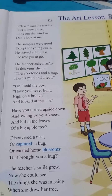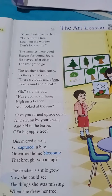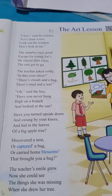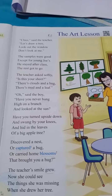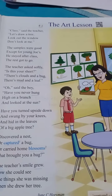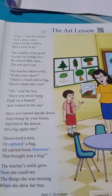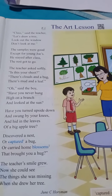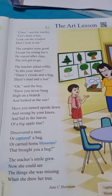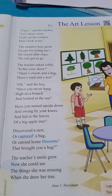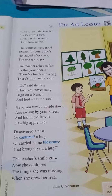Joe started asking questions to the teacher: 'Oh, said the boy, have you ever hung high on a branch and looked at the sun? Have you turned upside down and swung by your knees and hid in the leaves of a big apple tree?' Joe asked the teacher: have you ever hung high on a branch of a tree, moved side to side, and looked at the sun? Have you turned upside down and swung by your knees and hid in the leaves of a big apple tree?